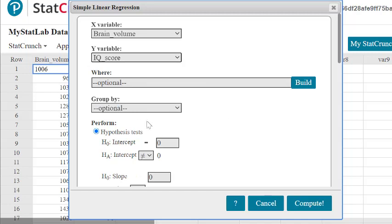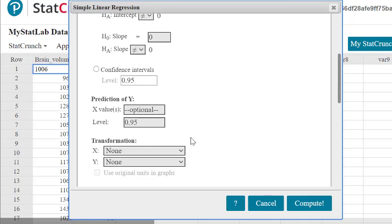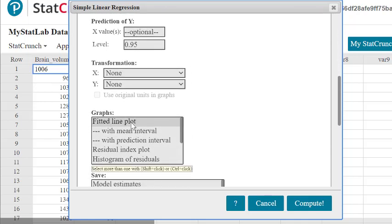The X variables are going to be the brain volumes. The Y variables are going to be the IQ scores. We're going to do a hypothesis test - note that it says intercept and slope. We're also interested in a plot, so let's do a fitted line plot. Let's compute.